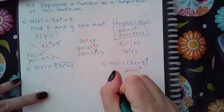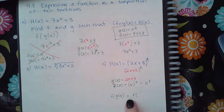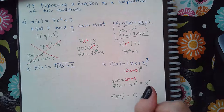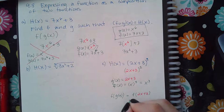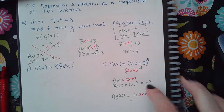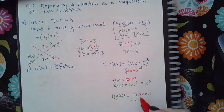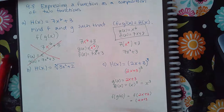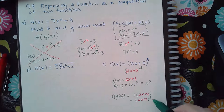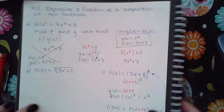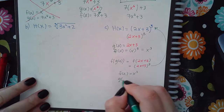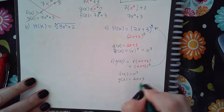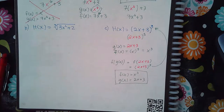When I find f of g of x, it means find f of 2x plus 3, then plug 2x plus 3 into the f function, which gives 2x plus 3 to the power of 3 — exactly what we started with. So these functions are correct: f of x is x cubed and g of x is 2x plus 3. Key point: the inside function is g, the outside function is f.